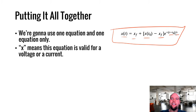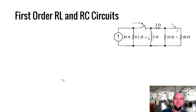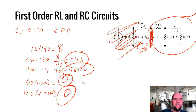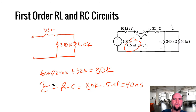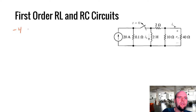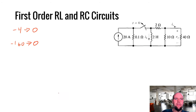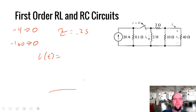Let's apply this equation to the RL circuit. Initial current iO = −4 A, final current = 0. Time constant τ = 0.2 s. So: i(t) = 0 + (−4 − 0) × e^(−t/0.2) = −4e^(−5t) A for t ≥ 0. Similarly, vO goes from −160 V to 0.